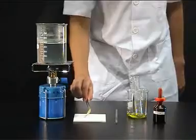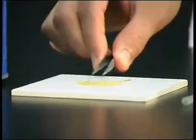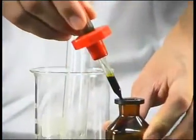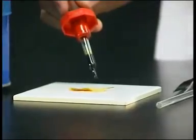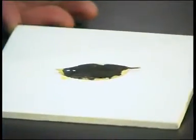The leaf is placed on a white tile. The iodine test for starch can now be carried out. The leaf is stained dark blue, which indicates the presence of starch.